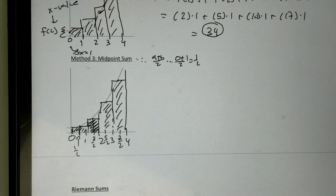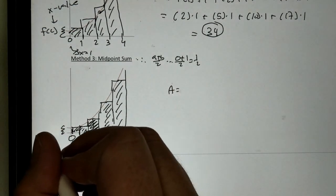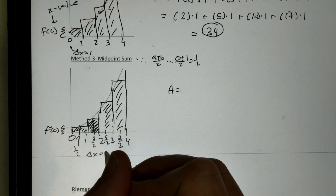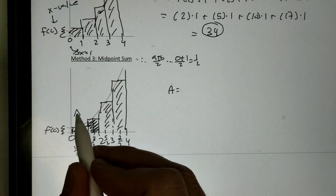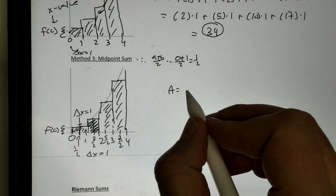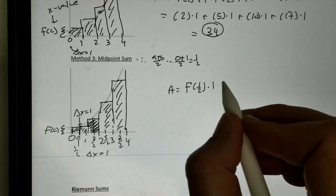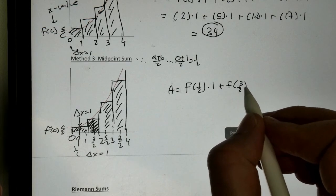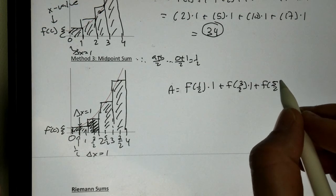We're going to get really good with fractions in here. So, to get our area, same thing. We are going to take the height, f of c, times the width, which of each one of those is still going to be 1. Each rectangle still has a width of 1. So, the first one, we use a value at 1 half times 1, plus the value at 3 halves times 1, plus the value at 5 halves times 1, plus the value at 7 halves times 1.